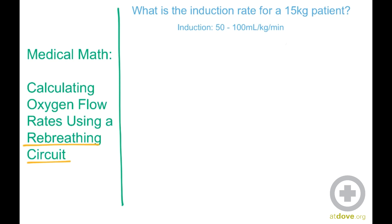So for this math problem today, we have a 15 kilogram patient, and the induction rate for a rebreathing circuit is 50 to 100 mils per kg per minute. So to start doing the math, we're going to do the low range first. We're going to take 15 kilograms times 50, and that gives us 750.